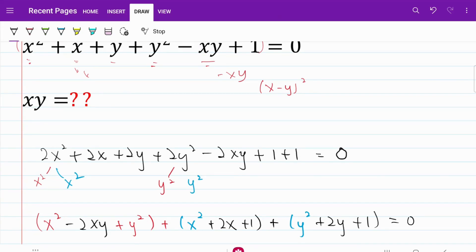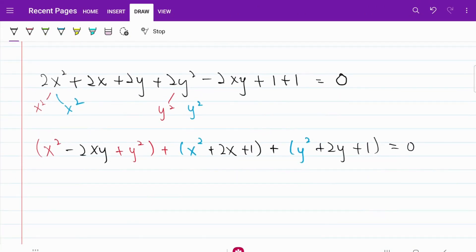So now let's try to take a closer look on each of the brackets. On the first bracket, I can write that as x minus y square. On the second bracket, I can write that as x plus 1 square. On the third bracket, I can write that as y plus 1 square. And all three together will be equal to 0.